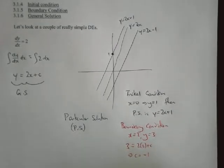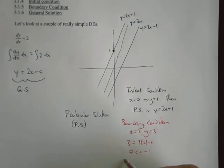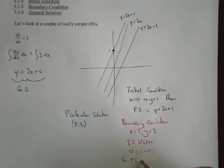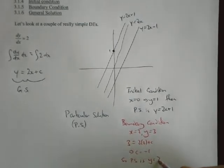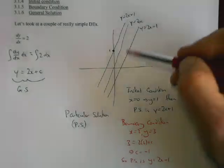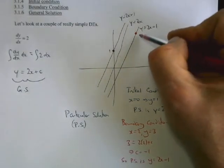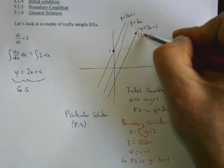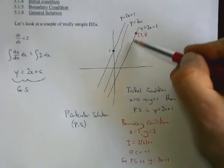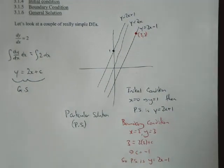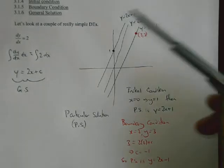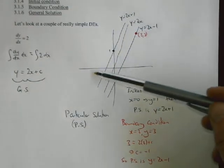So if we put them into this equation, y equals 2x plus C implies that C equals negative 1. So the particular solution we're looking at is y equals 2x minus 1. So it's actually right on that line. That's the point x equals 2, y equals 3, and that point says that this is the line that we're interested in.